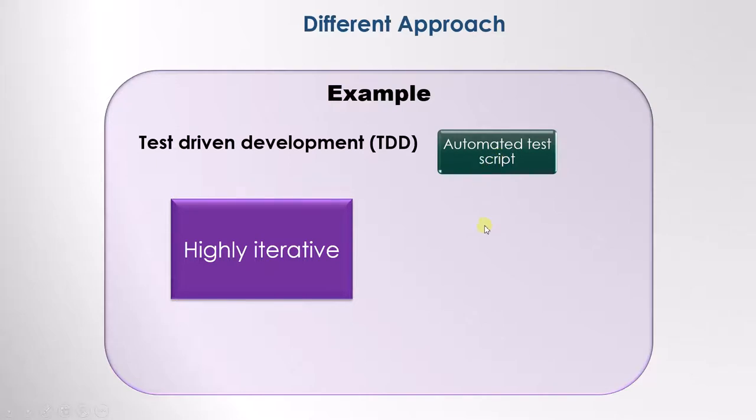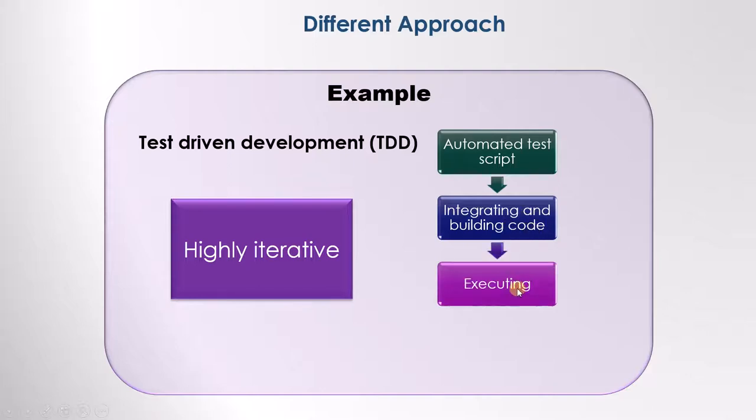After that, we will integrate and build the code. Once the code is written, we will execute it with the script. So first the test script is written from the specifications by the tester, while the code is written from the same specifications by the developer. This is written by the tester, and this is written by the developer. Once they are both ready, we will execute them together.